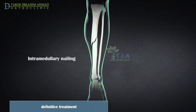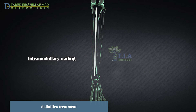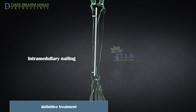Currently, the method most surgeons use for treating tibia fractures is intramedullary nailing. During this procedure, a specially designed metal rod is inserted into the canal of the tibia. The rod passes across the fracture to keep it in position, and the intramedullary nail is screwed to the bone at both ends. This keeps the nail and the bone in proper position during healing.